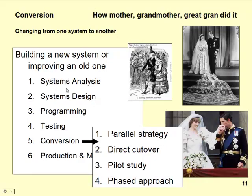Instead of designing a totally new system, you could have gone for a conversion. How was your mother, grandmother, or great-grandmother married? You could look at their plans and convert them to your own. So you've got a parallel strategy, a direct cutover, a pilot study, a phased approach — four things regarding conversion.